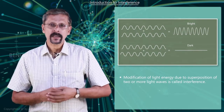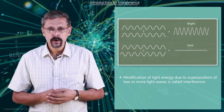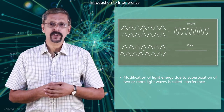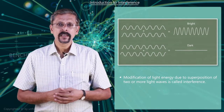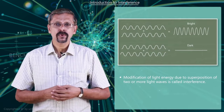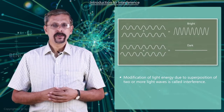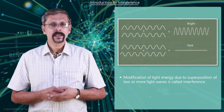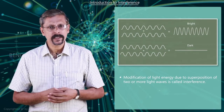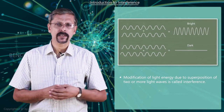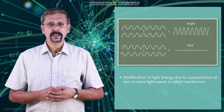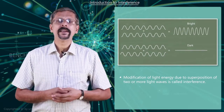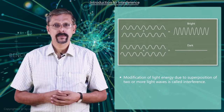If the crests or troughs of the waves arrive at the same point at the same instant, they constructively interfere, giving rise to maximum intensity leading to brightness. But when the crest of one wave and the trough of the other reach at the same point simultaneously, they destructively interfere, giving rise to minimum intensity leading to darkness.